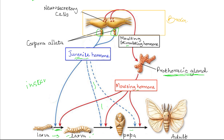The change from the larva into the pupa is also stimulated by the molting hormone. Another effect of the molting hormone is that it stimulates the formation of adult tissues from the larval tissues during the pupa stage. So the effects of molting hormone are: it stimulates molting from one larval stage to the next, from the larval stage to the pupa, and then stimulates the formation of adult tissues from the larval tissues within the pupa stage.